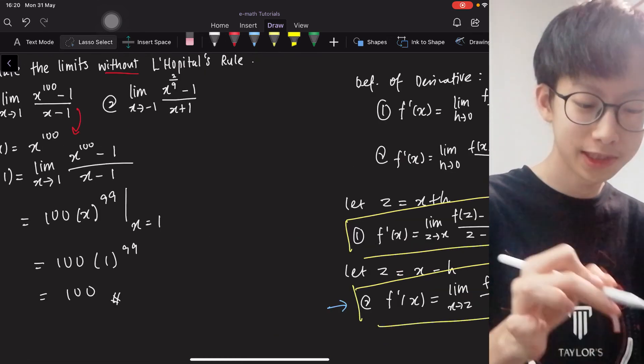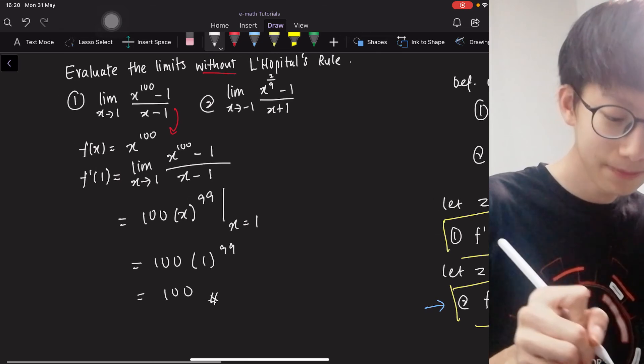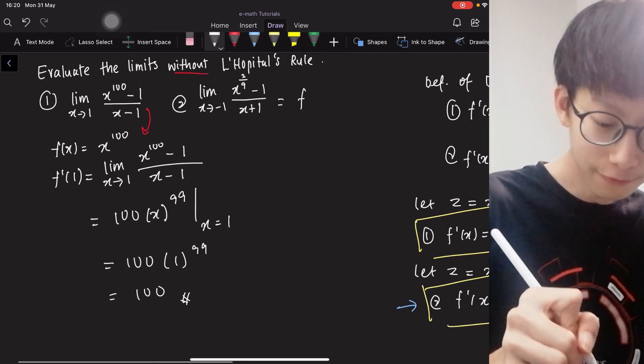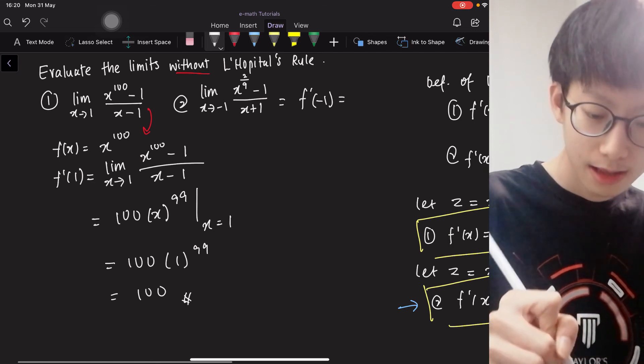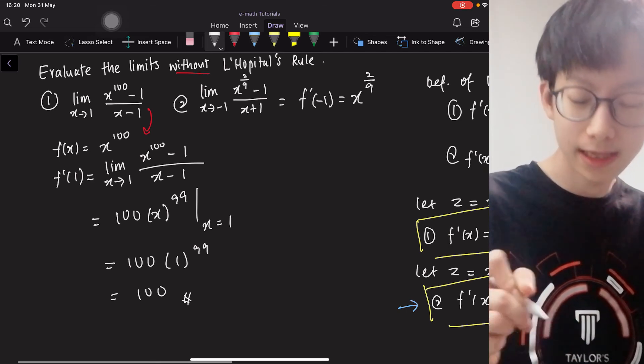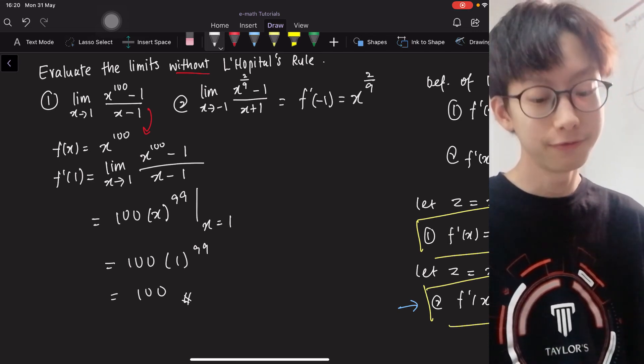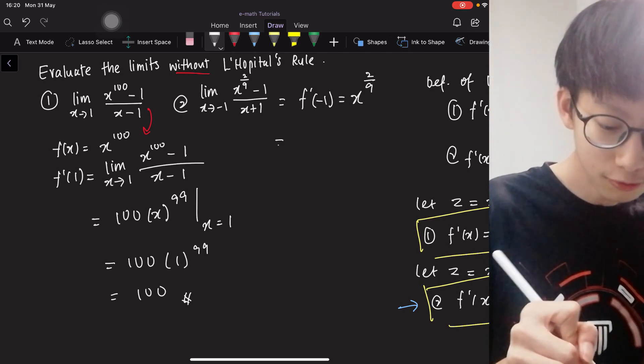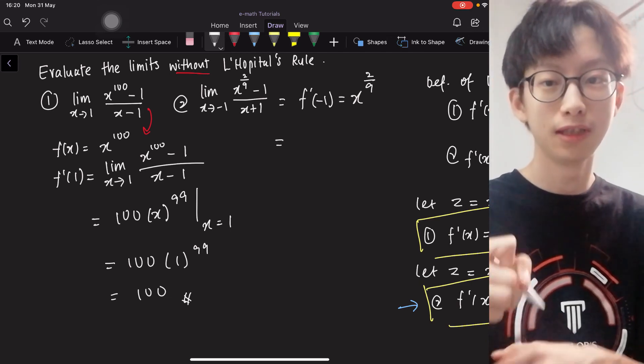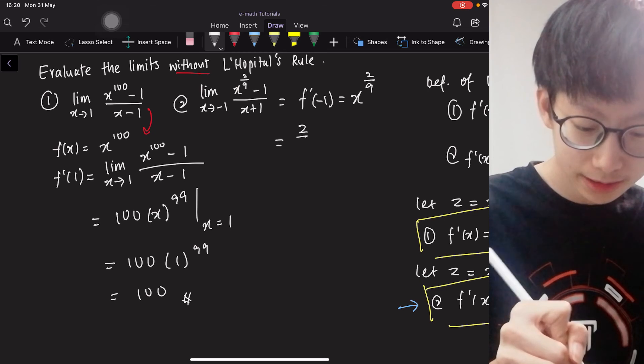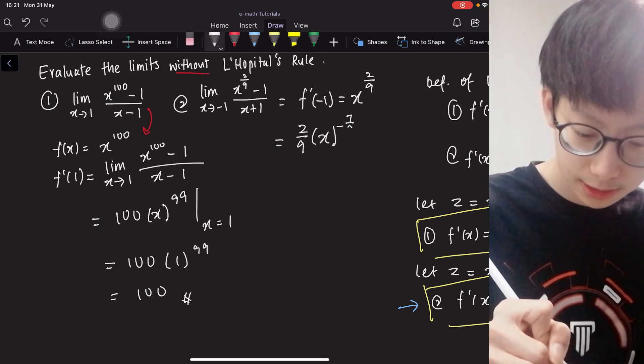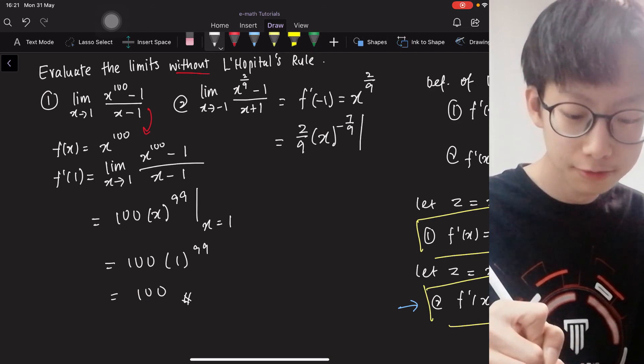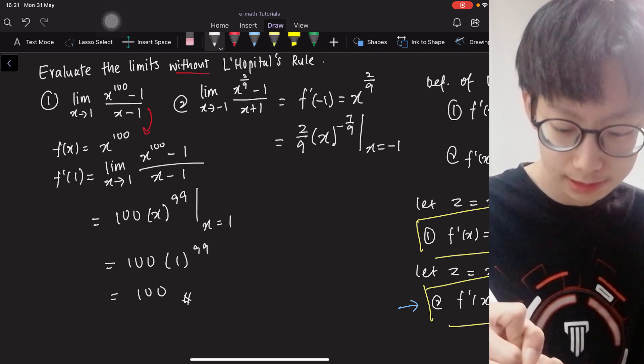Simple, isn't it? For the second limit, obviously you can see that it is actually the derivative of x to the 2/9 at x equals to negative 1. So immediately you can do the differentiation, which you bring down the power, power minus 1,